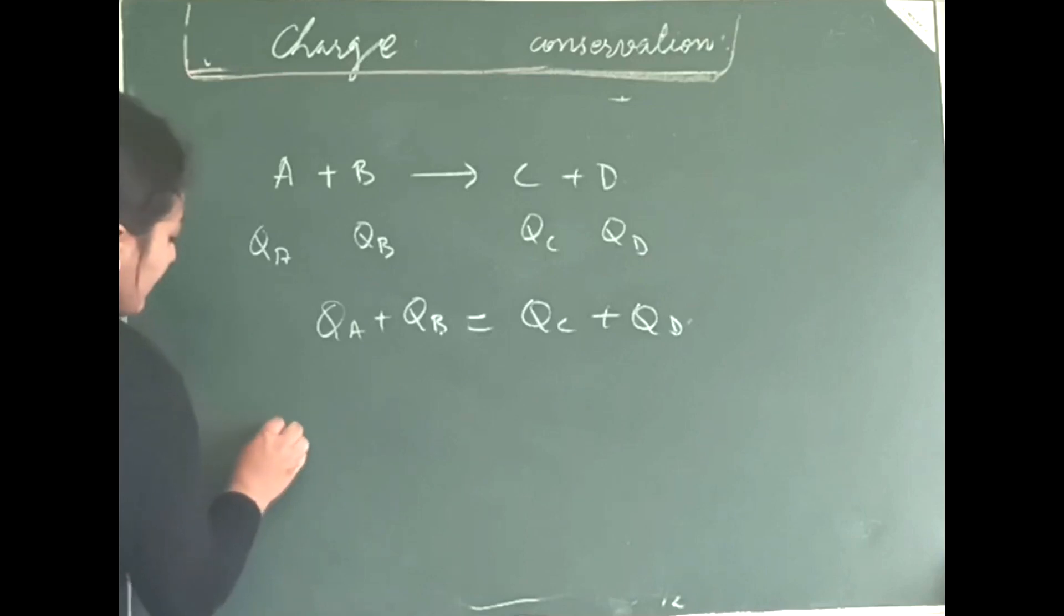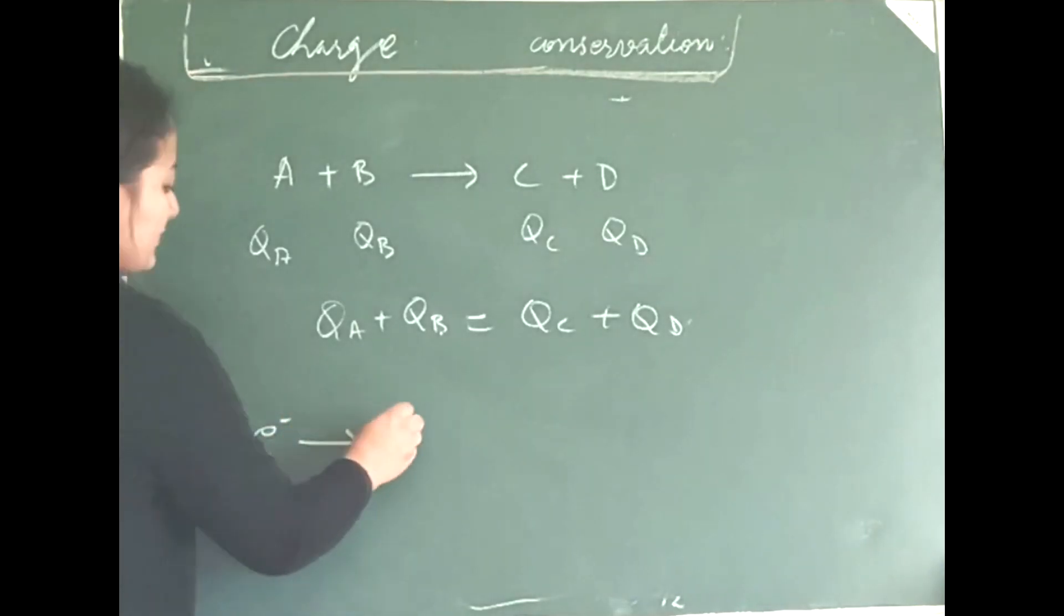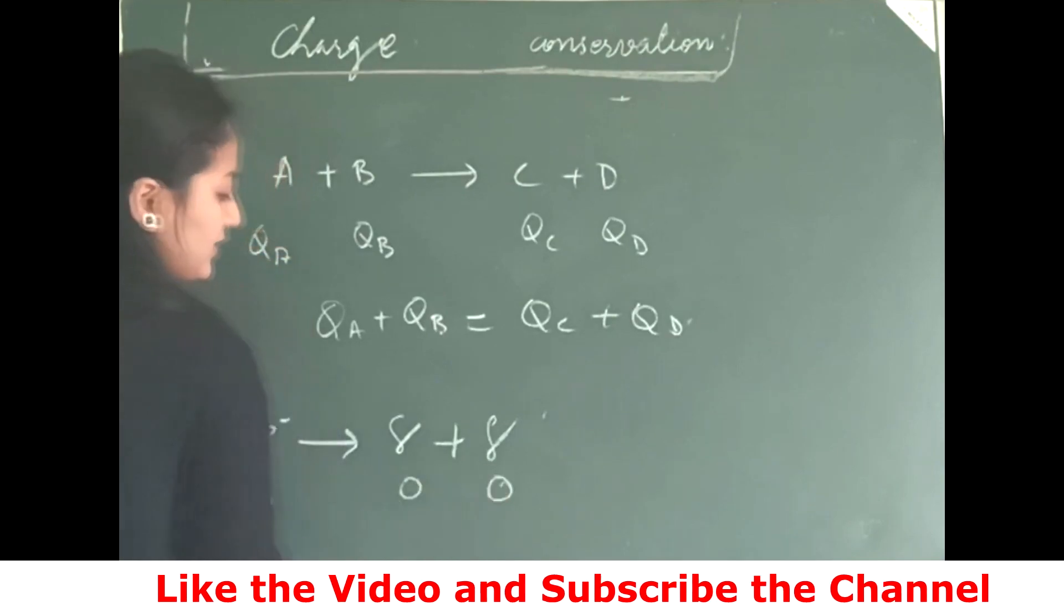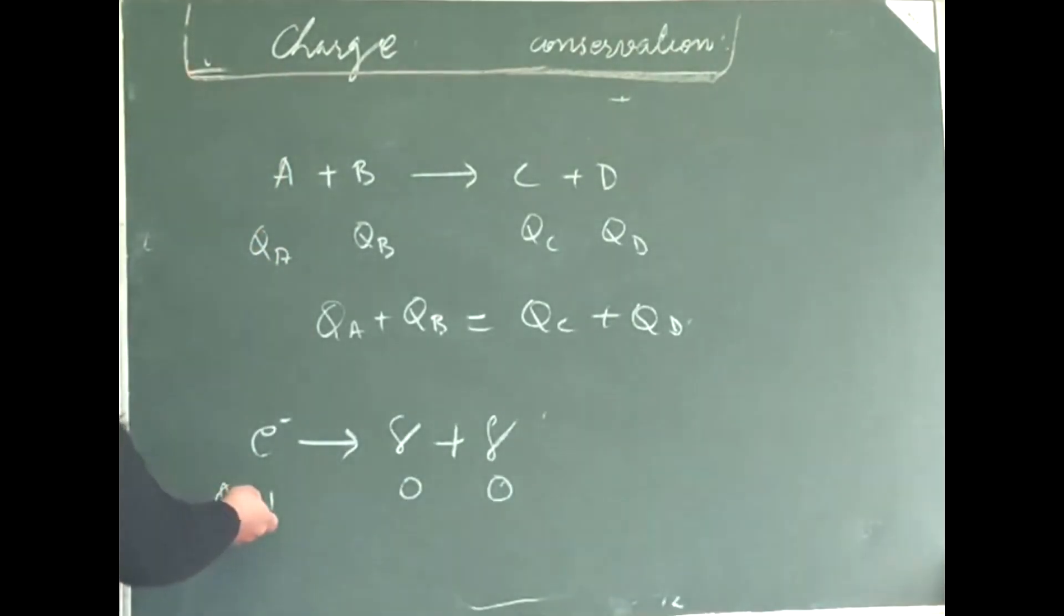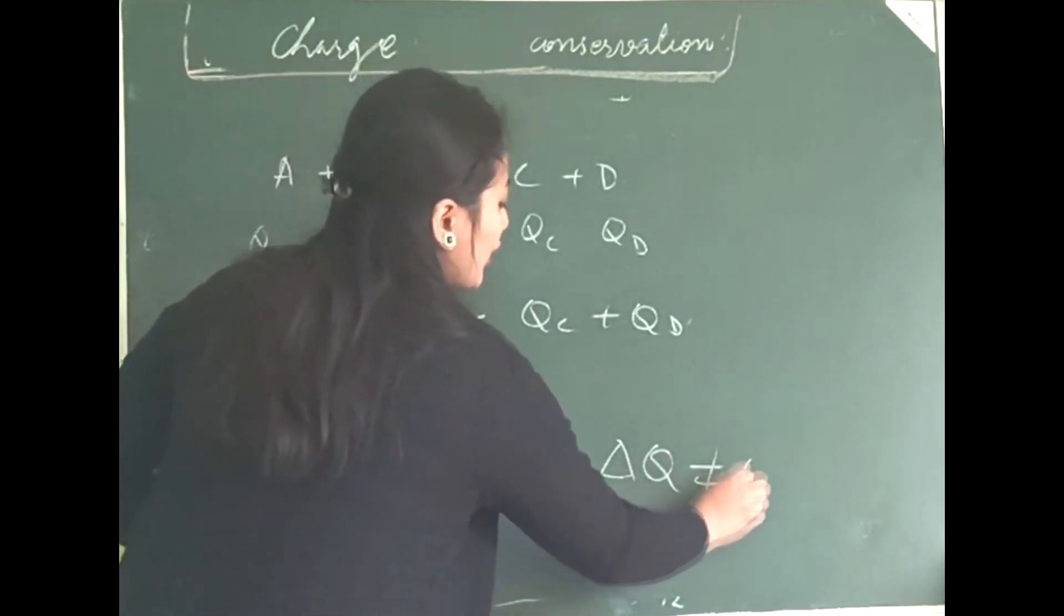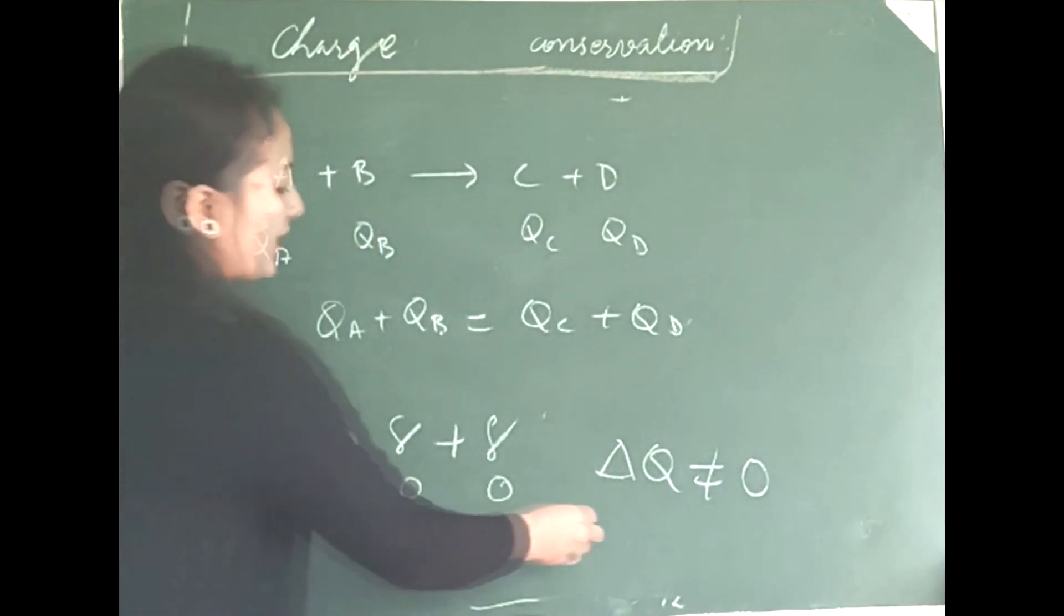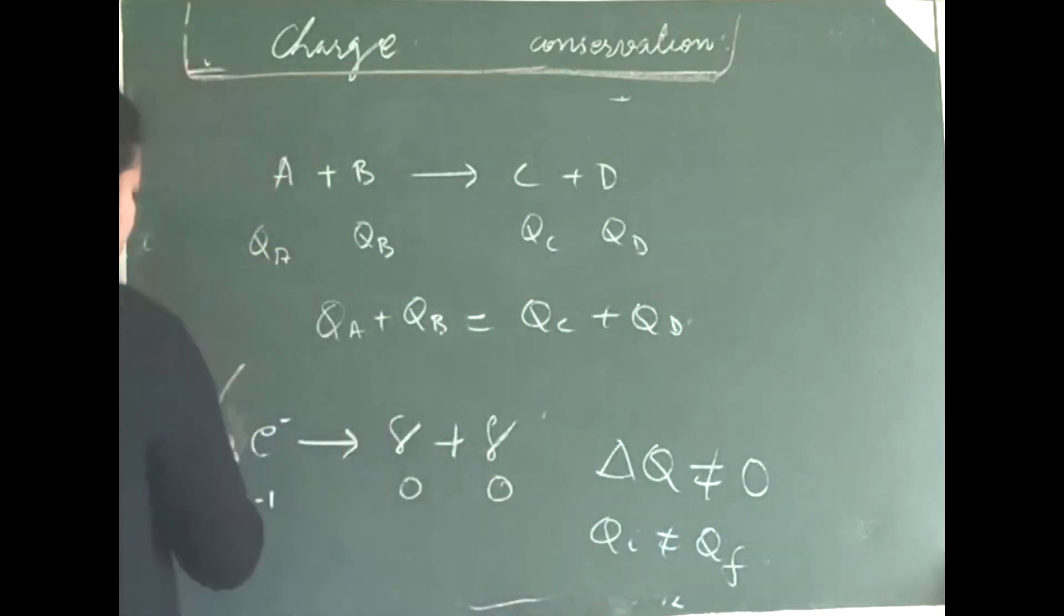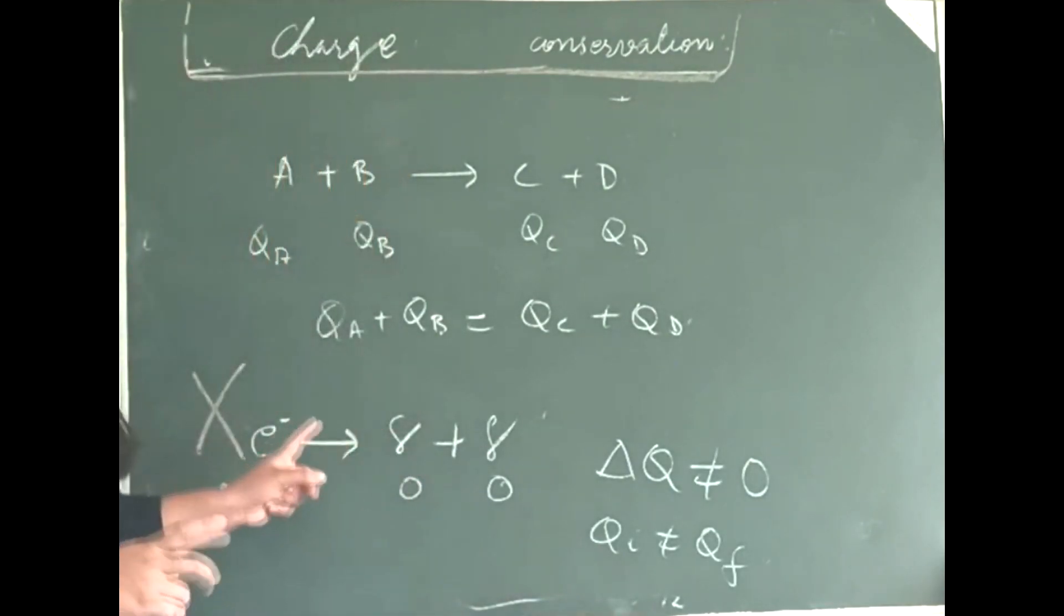Now, let me give you an example, where an electron goes into two gammas. What is the charge here? Here, the charge is minus 1, here the charge is 0 and here it is 0. It's very easily you can see that this side it is minus 1, whereas this side it is 0. Hence, here, your delta Q is not equal to 0, your Qi is not equal to Qf. Hence, this reaction is not allowed. By charge conservation, this interaction is not allowed.